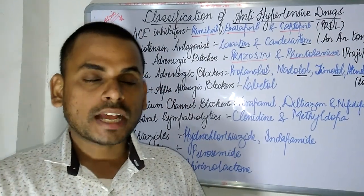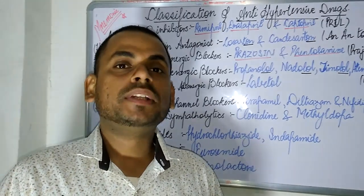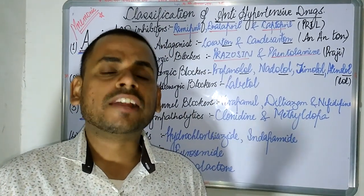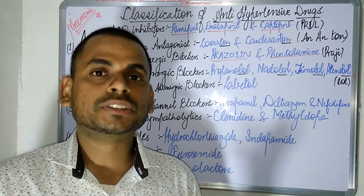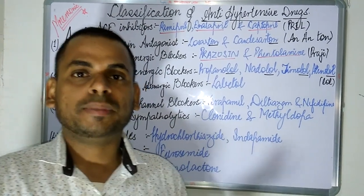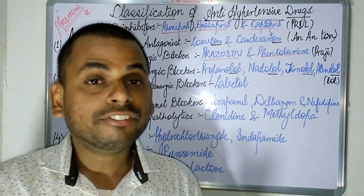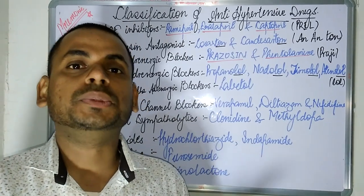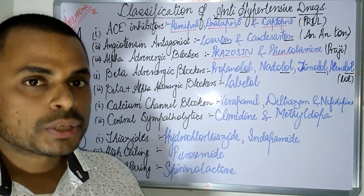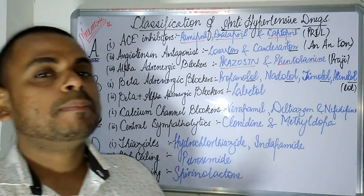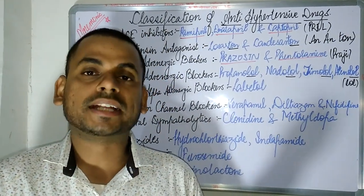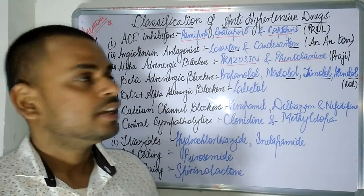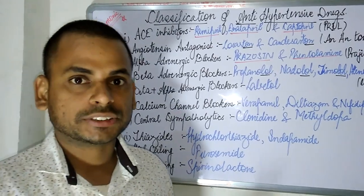The mnemonic I have made to easily remember the classification of the antihypertensive drugs can be seen in the form of alphabetical order — the first alphabets A, B, C, and D — where every letter of the alphabet is going to depict one of the classes of drugs used as antihypertensives. Every alphabet corresponds to one of the classes of drugs.